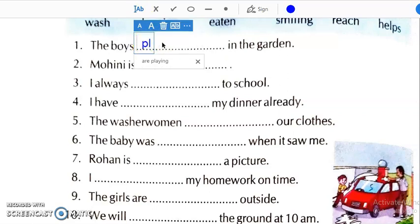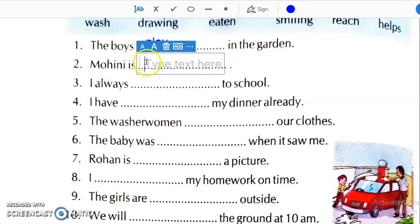Here we will write play. Whatever the verb is given we have to write as it is. These boys are playing daily in the garden. That is why we will write play only. Mohini is. What will we write here? Singing. Mohini is. Is is written. So, we have to write only word singing.